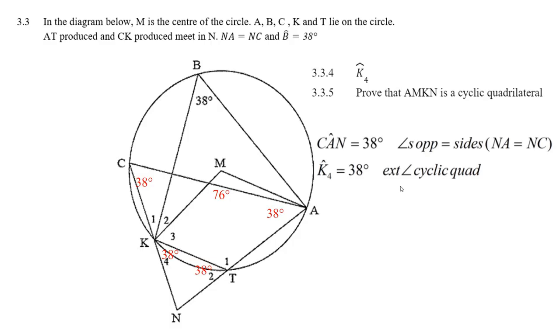Now, they say, can you prove that A, just go from A, go to M, go to K, and go to N. Why is that a cyclic quad? Why is that going to be a cyclic quad?